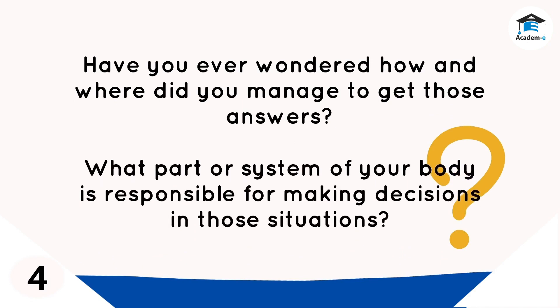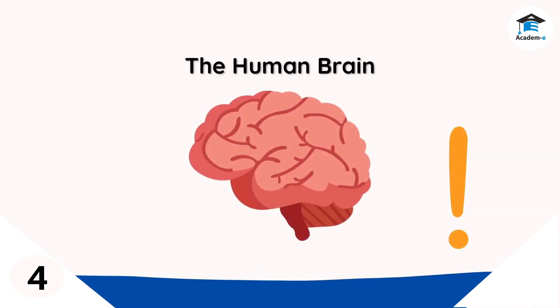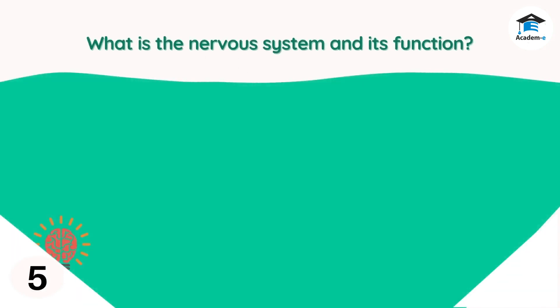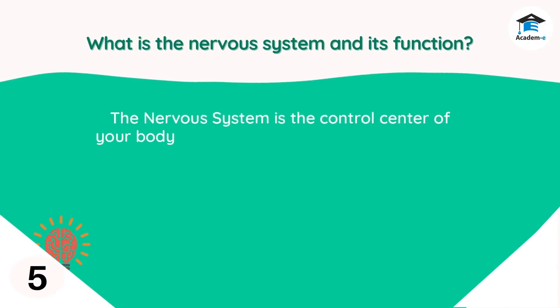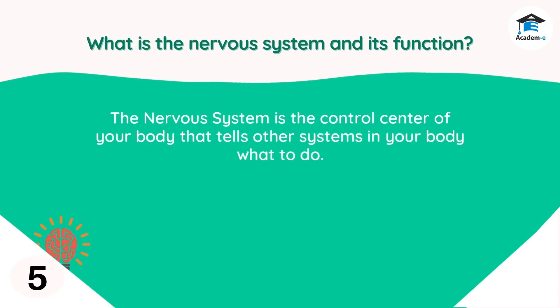What part or system of your body is responsible for making decisions in those situations? That's correct — your brain is responsible for it, which is an organ in your nervous system. The nervous system is the control center of your body that tells other systems in your body what to do.